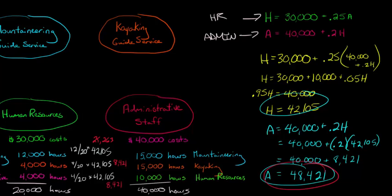Now, we use this $48,421, we can use that to allocate now the administrative staff component. So the mountaineering will be 15 divided by 40 times 48,421. And that's going to be 18,158. So that's the amount of administrative staff costs allocated to mountaineering. It's going to be the same amount allocated to kayaking service because kayaking has 15,000 hours and mountaineering has 15,000 hours. So they're both 15 divided by 40, so that's also going to be 18,158. And then HR is going to be 10 divided by 40 times 48,421, which is going to be $12,105.